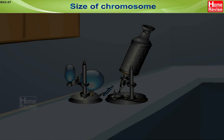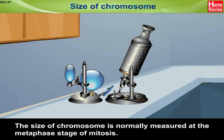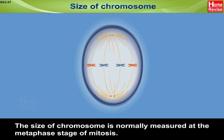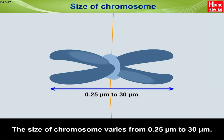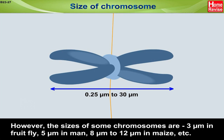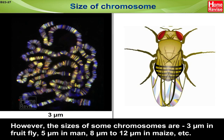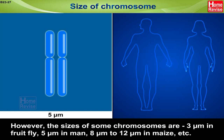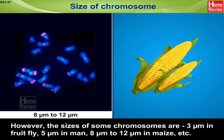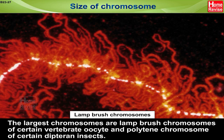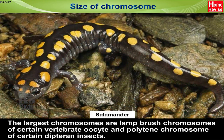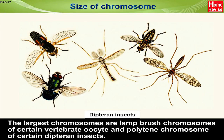Size of chromosomes: The size of a chromosome is normally measured at the metaphase stage of mitosis. The size of chromosomes varies from 0.25 micrometers to 30 micrometers. The sizes of some chromosomes are 3 micrometers in fruit fly, 5 micrometers in man, and 8 to 12 micrometers in maize. The largest chromosomes are lampbrush chromosomes of certain vertebrate oocytes and polytene chromosomes of certain dipteran insects.